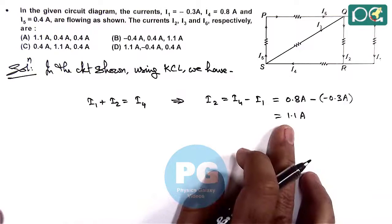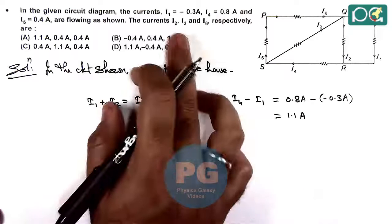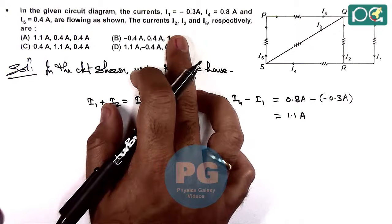And the value of i2 we have got as 1.1 ampere. Now if we calculate the value of i3, that can be obtained